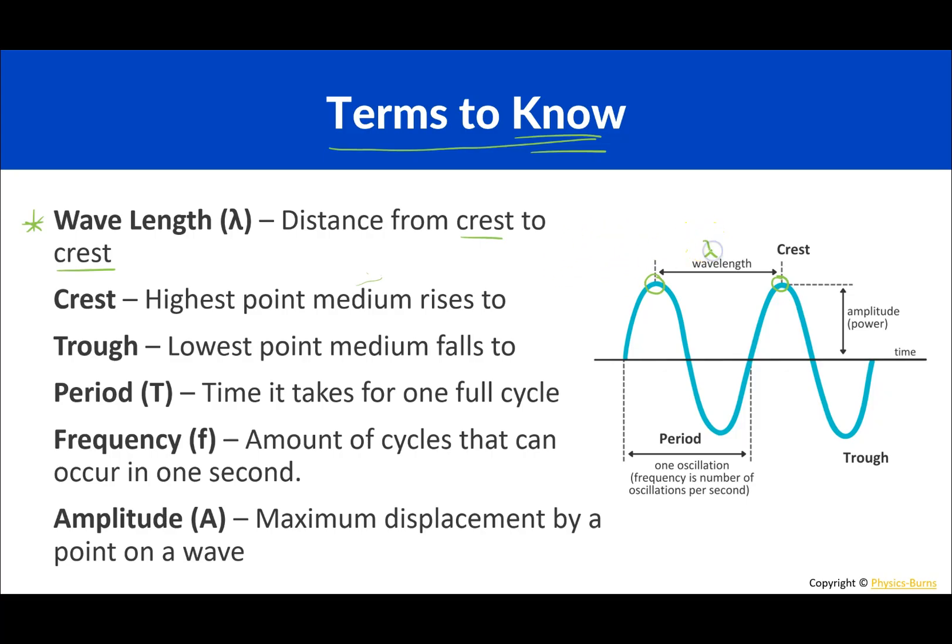Okay but remember it just needs to be a full cycle. So we start here and go up and go up and go down and go start to go up again. This again is a full cycle. So this would also be a wavelength. From here to here is a wavelength. Okay not from here to here. Yes it is the same point but that's not a full cycle. That's just half the cycle. It needs to come back to the same point.